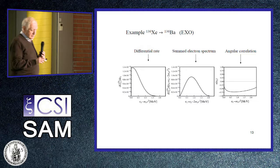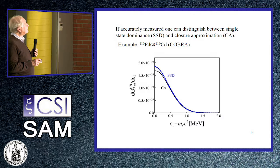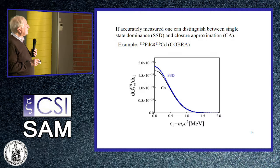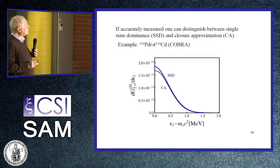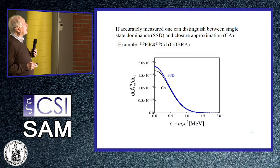The angular correlation is important for designing detectors. One can also distinguish between two approximations — single-state dominance or the closure approximation — if measured accurately. An example for the decay from palladium to cadmium, of interest to the COBRA experiment, shows that the two different approximations produce a difference in the low-energy part of the single-electron spectrum. If one could measure this accurately for two neutrinos, one may be able to tell the difference between the two.